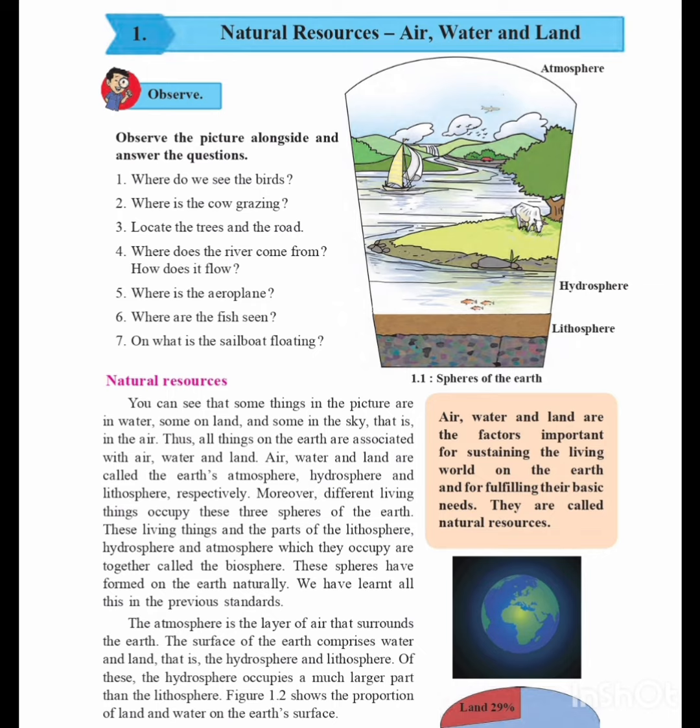Natural Resources: You can see that some things in the pictures are in water, some on land, and some in the sky — that is, in the air. Thus, all things on the earth are associated with air, water and land.